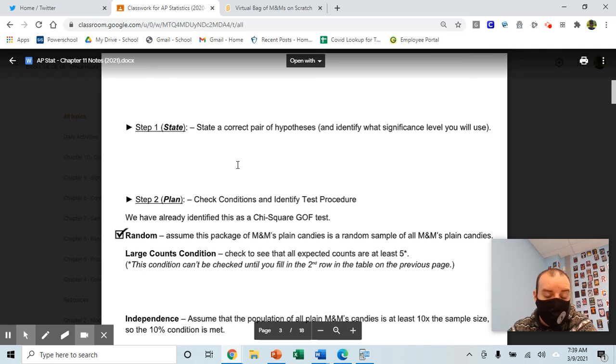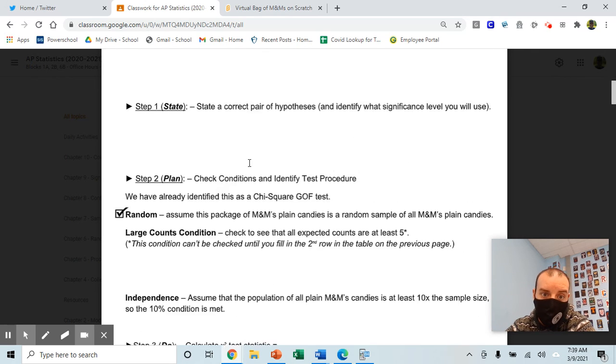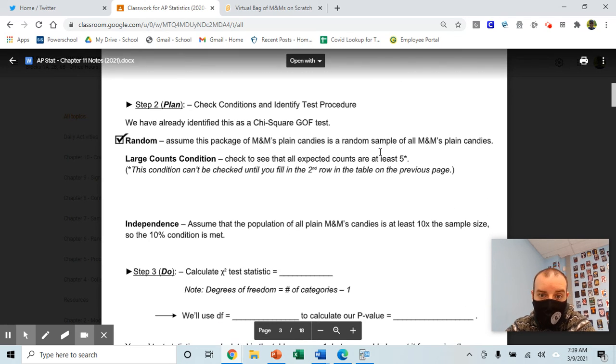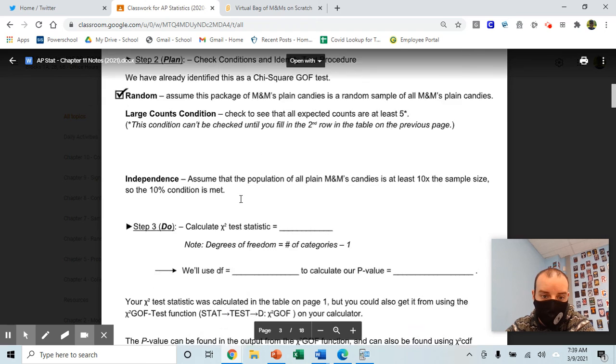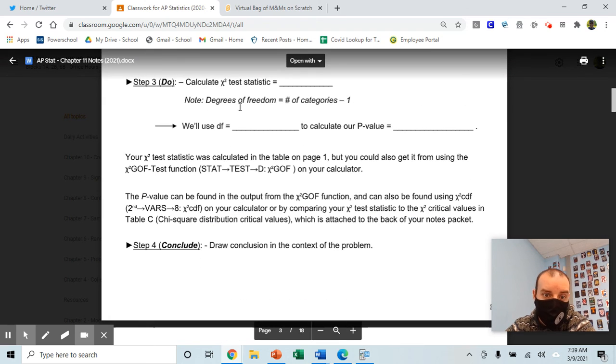Then go through using that same state, plan, do, and conclude model that we've been doing: write your hypotheses, check the conditions, which are pretty much checked for you here, find the test statistic, the degrees of freedom and the p-value, and then write your conclusion in the context of the problem. Good luck. See you in class.